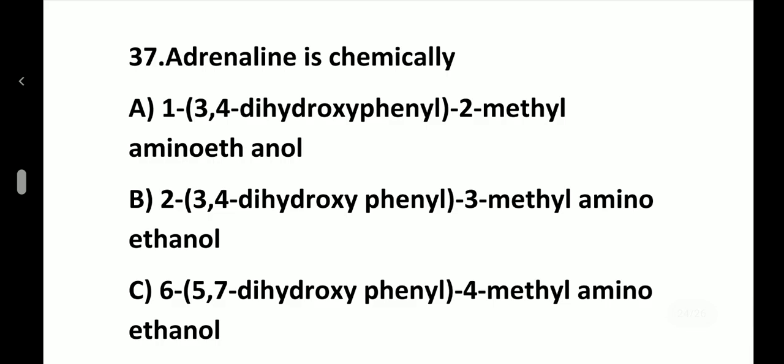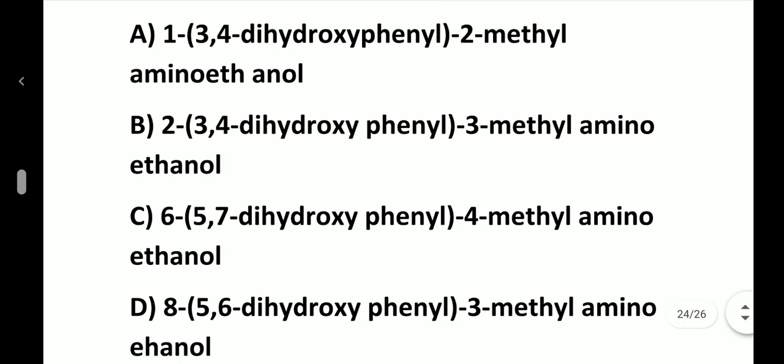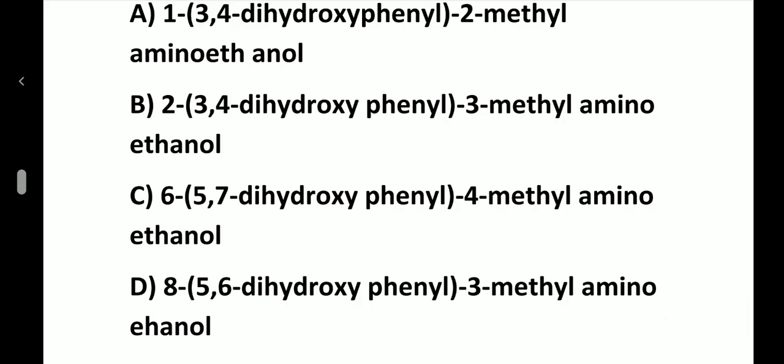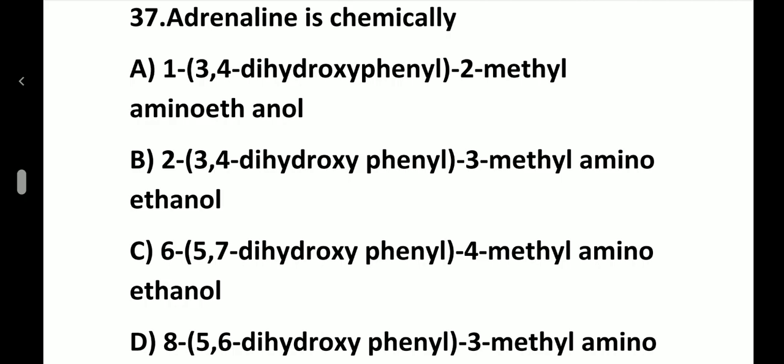Question number 37. Adrenaline is chemically: option A, 1-(3,4-dihydroxyphenyl)-2-methylaminoethanol; option B, 2-(3,4-dihydroxyphenyl)-3-methylaminoethanol; option C, 6-(5,7-dihydroxyphenyl)-4-methylaminoethanol; option D, 8-(5,6-hydroxyphenyl)-3-methylaminoethanol. Answer is option A, 1-(3,4-dihydroxyphenyl)-2-methylaminoethanol.